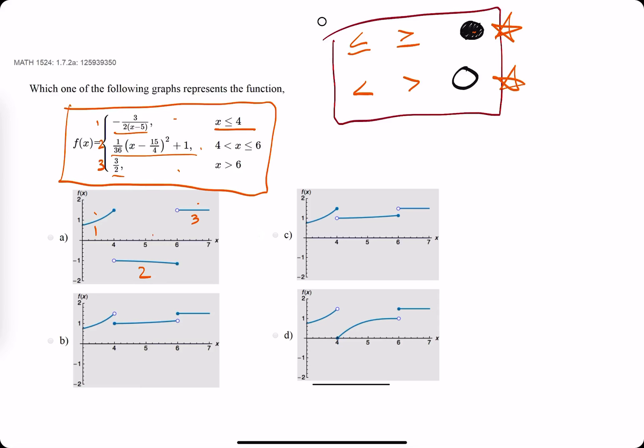When it's less than or equal to, or greater than or equal to, you're looking for a solid dot. When it's just less than or greater than, you're looking for an open dot.